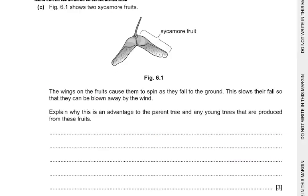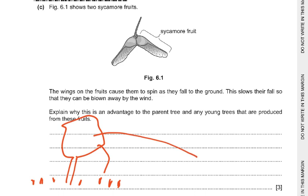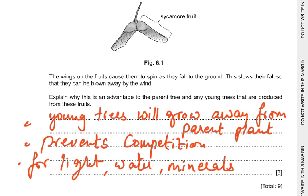Figure 6.1 shows two sycamore fruits. The wings on the fruit cause them to spin as they fall to the ground, slowing their fall so they can be blown away by the wind. Explain why this is an advantage to the parent tree and any young trees produced from these fruits. The young trees will grow away from the parent plant, preventing competition for resources like light, water and minerals. If they all fell just under the tree, they would all be competing and would have less chance of survival.